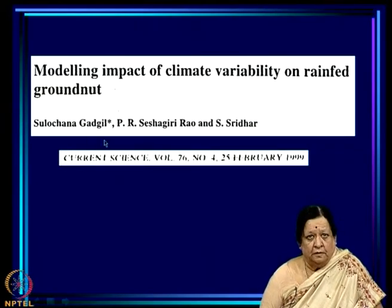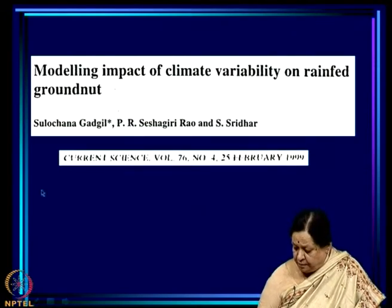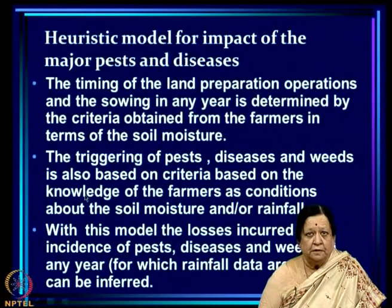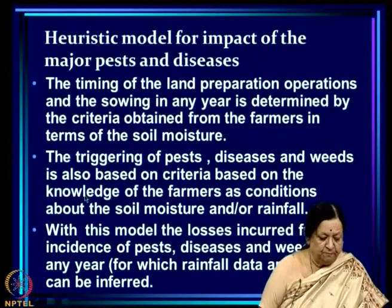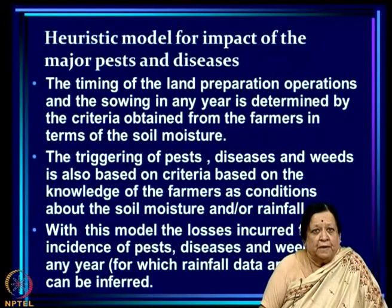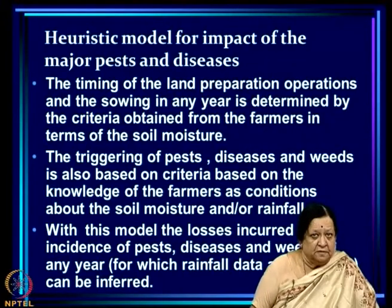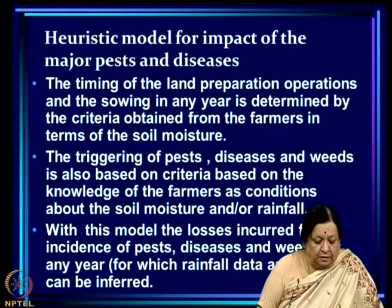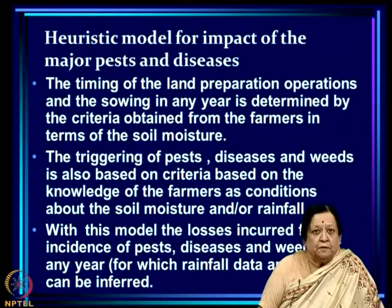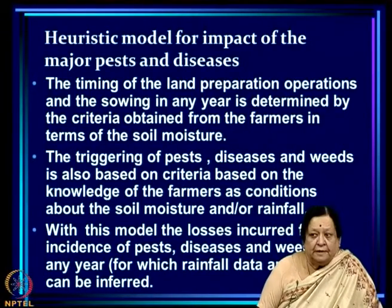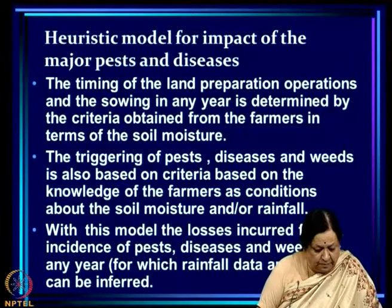This model is published in a paper in Current Science in 1999. We are looking at a heuristic model for the impact of major pests and diseases. The first thing needed is the timing of land preparation operations and sowing in any year — how do we determine that given the rainfall pattern?